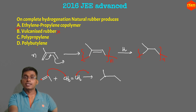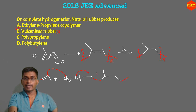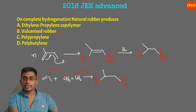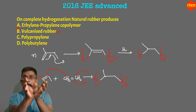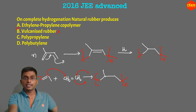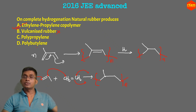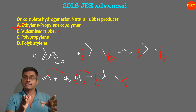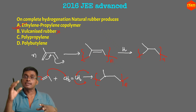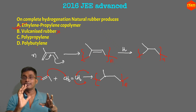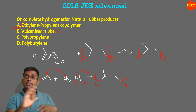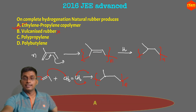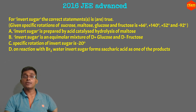Upon complete hydrogenation of the ethylene-propylene copolymer, n times we get the same saturated structure as from hydrogenated natural rubber. The double bonds connect to other monomer units — adding these two monomer units produces the ethylene-propylene copolymer. If you are able to write polymer structures from monomers, just practice the polymers given in the NCERT polymers chapter table. That's it. Conclusion: option A is correct.